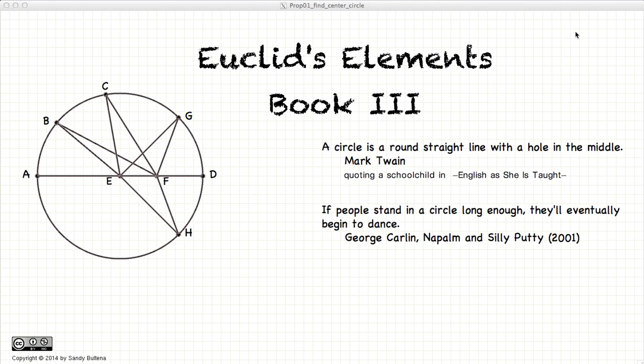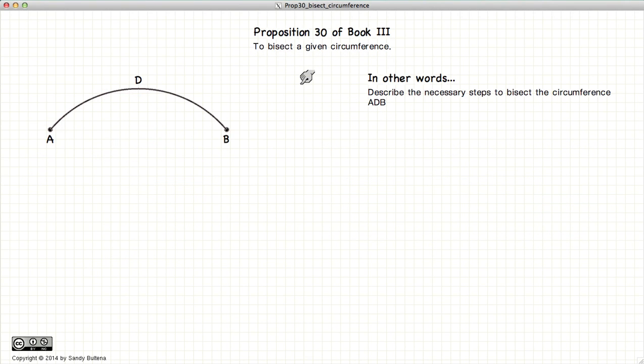Hi, welcome to my tutorials on Euclid's Elements Book 3. This video presentation is on Proposition 30 of Book 3, which describes the methods necessary to bisect a given circumference.